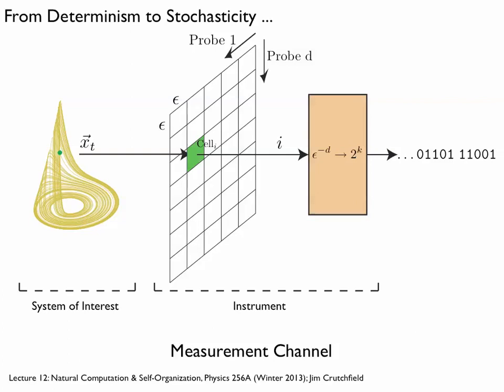Today, we imagine there's some dynamical system — continuous state, continuous time — and our access to that, as observers, is mediated by instruments. Here's a cartoon picture of what the instrument is. First, you make some choice as to the number of probes you put into your system. You might imagine looking at some turbulent fluid and asking how many probes to put in to capture that dynamic.